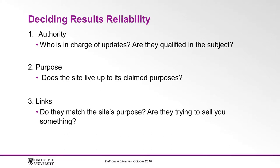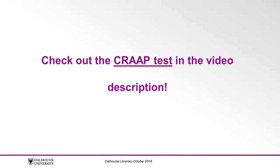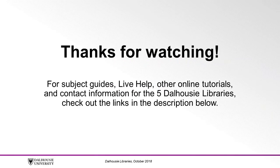Let's talk about some simple ways to evaluate the quality of websites. Things to watch for include authority: who is in charge of updating the website and what makes them qualified to write about it? Next is the website's purpose: does the website tell you its purpose and live up to that statement? Also, what kind of links are on the website and do these links match the site's purpose? Be wary of websites with minimal coverage of a topic and if there might be knowledge gaps that the author left out. Ask yourself about the website's currency: is this information recent and can you trust that it's being updated regularly? Finally, consider the objectivity of a website — is the website trying to sell you a product or convince you of a specific idea? If so, it might be a biased website. Have a look at the About page of the website to learn more. For more tips to help you decide if a website is reliable, see the link below to the CRAAP test.